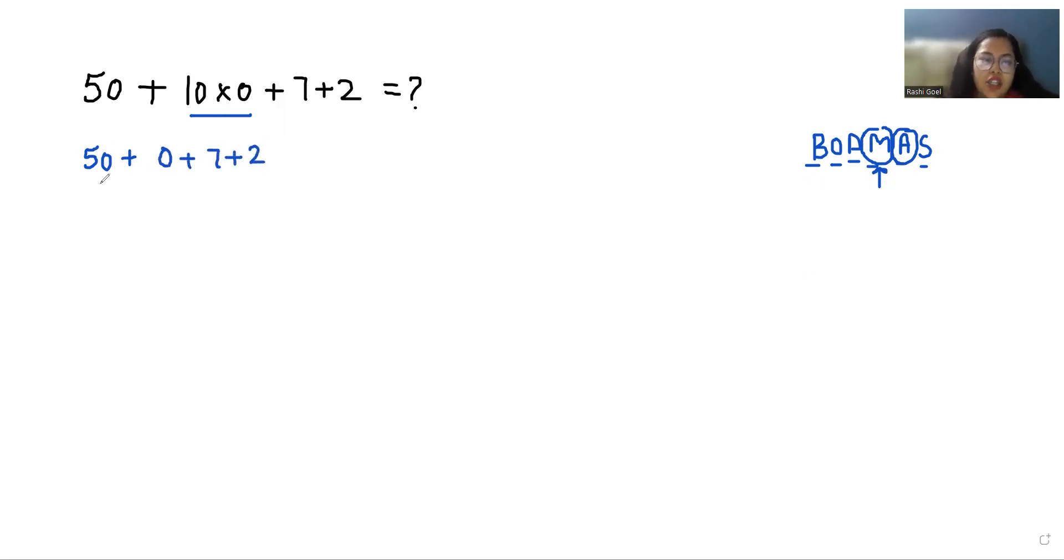Now there's only one sign, that is addition. So simply add: 50 plus 0 is 50, 50 plus 7 is 57, 57 plus 2 is 59. So the final answer is 59.